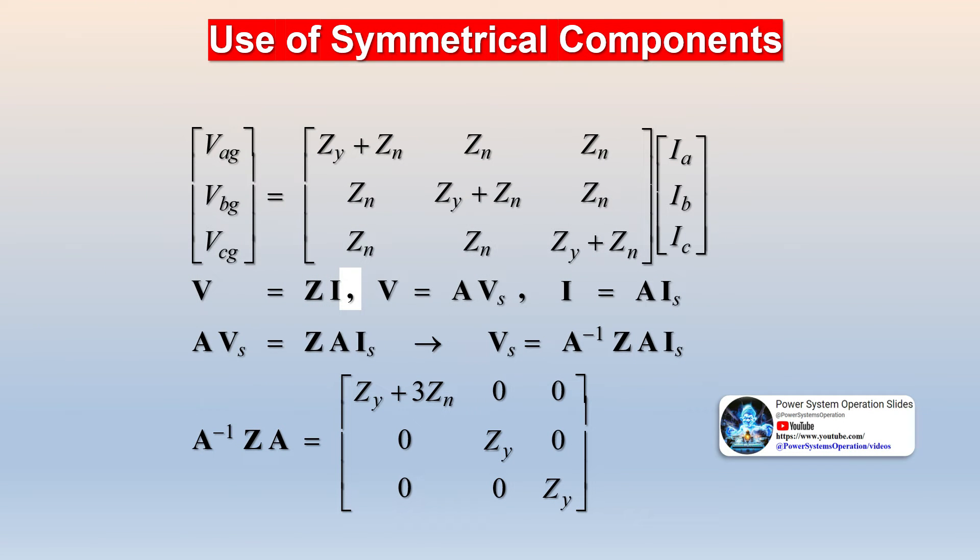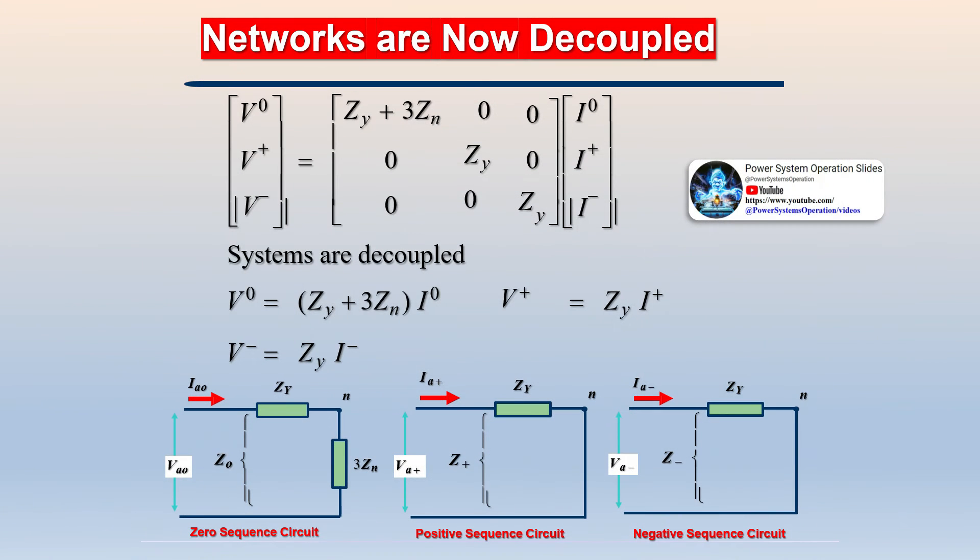This method is also called a three-component method. The method of symmetrical components simplified the problems of the unbalanced three-phase system. It is used for any number of phases but mainly used for the three-phase system. The unbalanced three-phase system is solved regarding symmetrical components and then it can be transferred back to the actual circuit.